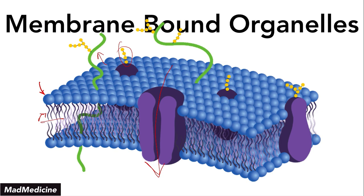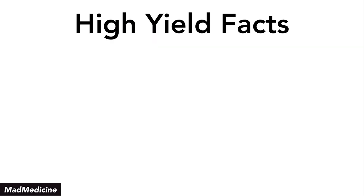When it comes to the actual cell itself, eukaryotic cells have organelles. Organelles are little tiny structures in the cell that allow the cell to carry out a bunch of functions. I like to think of the cell as a city — we're going to call this cell city. Each organelle has a function and is going to be related to the function of something in a city.